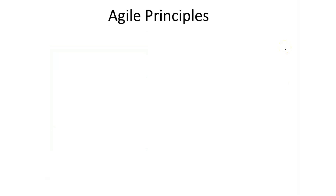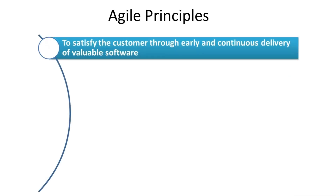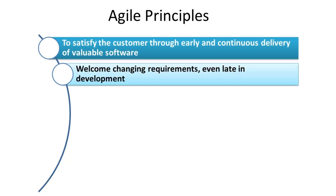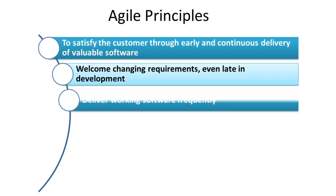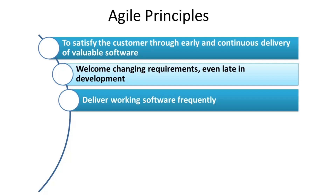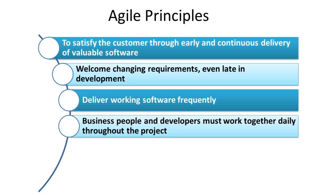Now let us quickly discuss about the 12 principles of Agile. Agile is a customer-centric and value-driven development methodology. Agile embraces changes even late in the development cycle to adapt to the evolving needs. It is an iterative and incremental methodology where working product increments are delivered to the end customers as a continuous process seeking their feedbacks. Stakeholders and Scrum team members should have regular communication and should collaborate together to achieve the final goal.